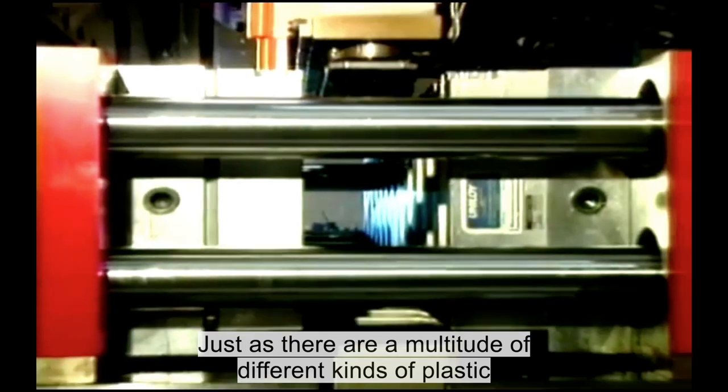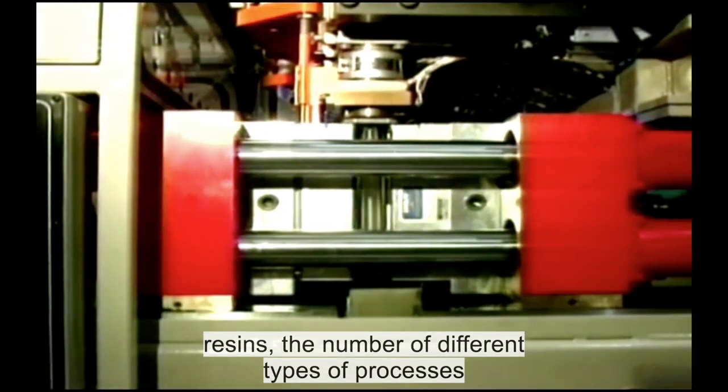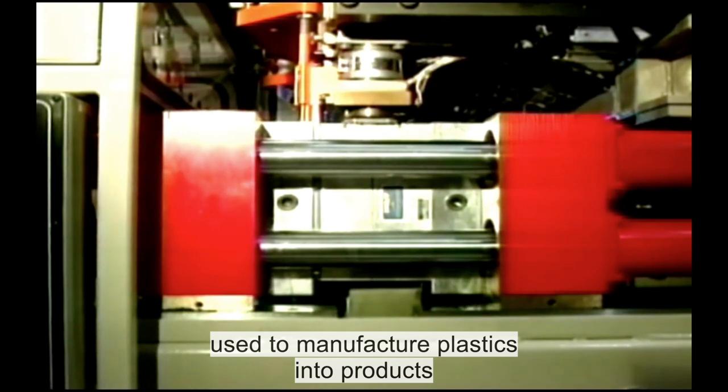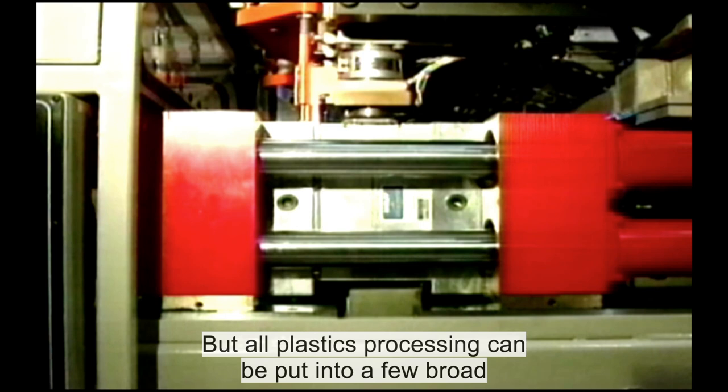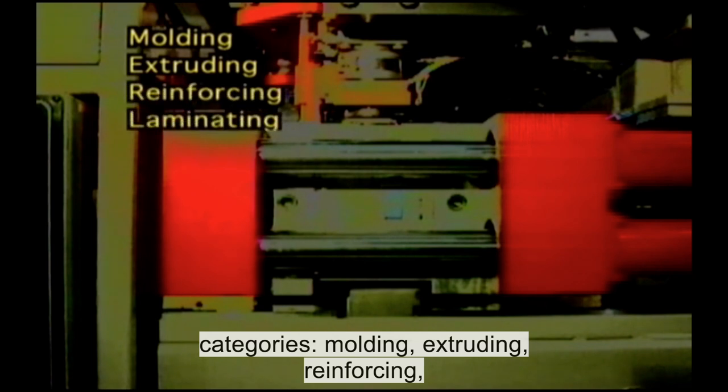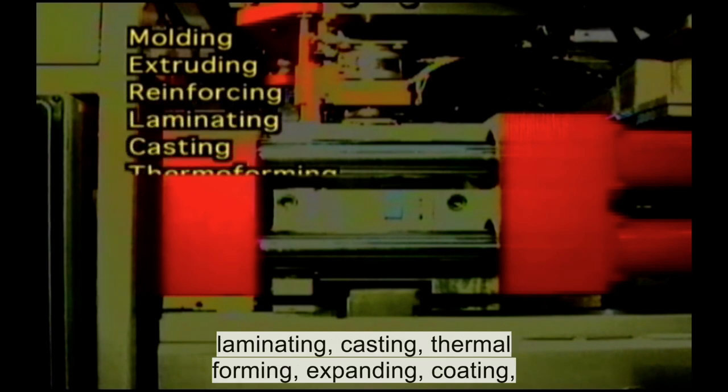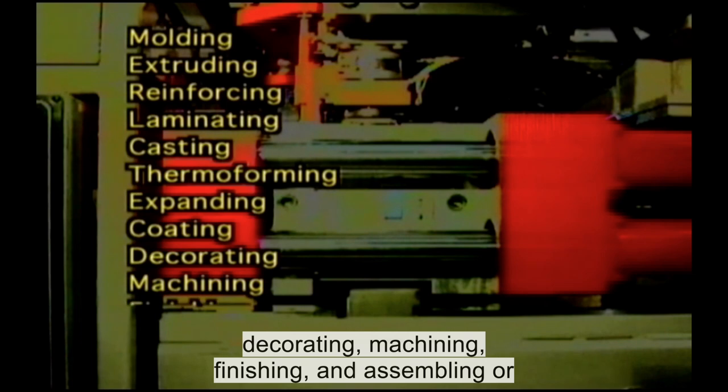Just as there are a multitude of different kinds of plastic resins, the number of different types of processes used to manufacture plastics into products seems almost infinite. But all plastics processing can be put into a few broad categories: molding, extruding, reinforcing, laminating, casting, thermal forming, expanding, coating, decorating, machining, finishing, and assembling or fabricating.